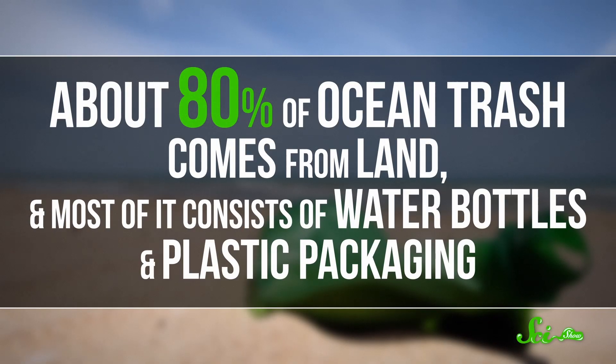About 80% of ocean trash comes from land, and most of it consists of water bottles and plastic packaging. And there are ways to reduce that trash, things like being less dependent on plastics, making sure waste is disposed of properly, and putting up catch nets around storm drains. No matter how we do it, cleaning up the oceans will be hard. But by preventing as much plastic as possible from getting into the oceans in the first place, and by collecting as much as we can of what does get in, we might be able to make some progress.